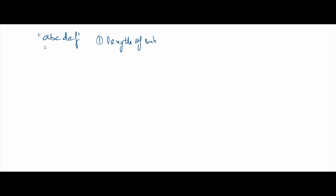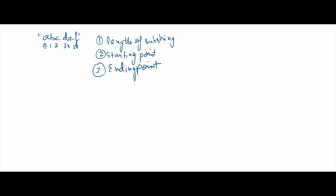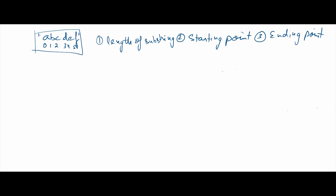So what are the variables we need to manipulate when writing the function? One is the length of a substring. We'll also traverse through the string — a substring can start from index zero, one, two, three, four, or five. It has a starting point and an ending point. So we have three variables: length of the substring, starting point, and ending point.